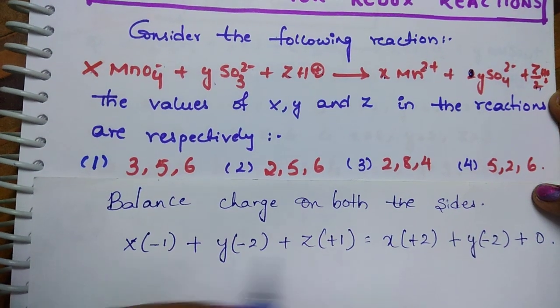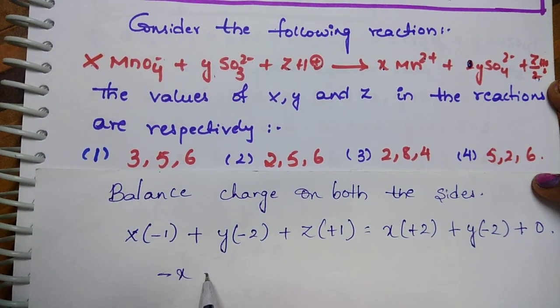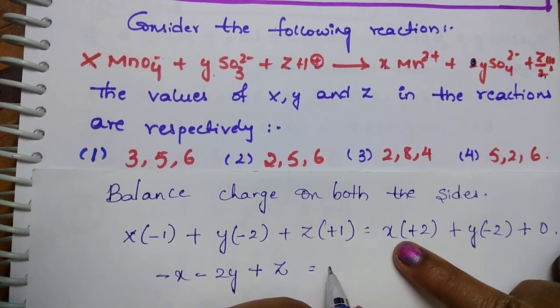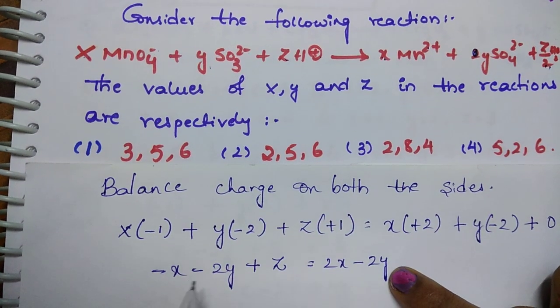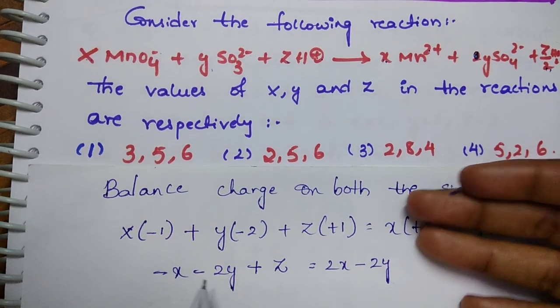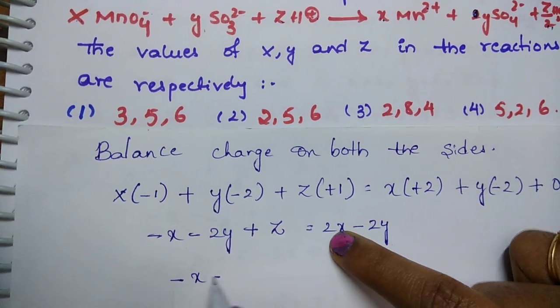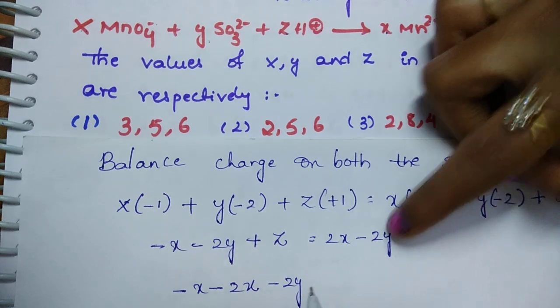Now solve this: x into (-1) gives -x, -2y plus z is equal to 2x - 2y. Then move this toward left hand side to get the relation: -x - 2x - 2y, if this 2y moves that side, plus 2y plus z is equal to 0.